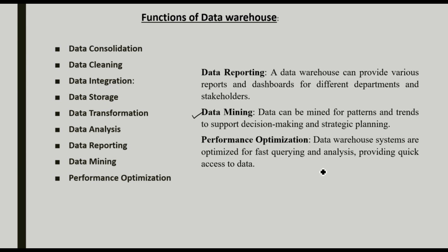Next is performance optimization — data warehouse systems are optimized for fast work and query performance. So these are the functions of a data warehouse: data consolidation, data cleaning, data integration, storage, transformation, analysis, reporting, mining, and performance optimization. Thank you.